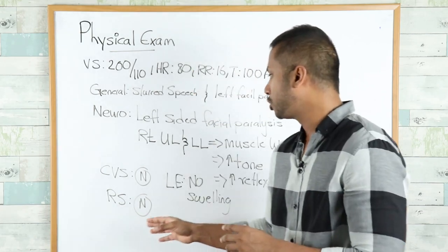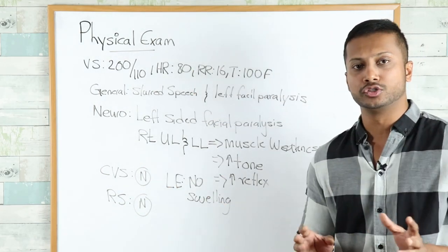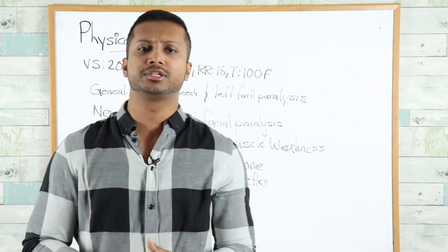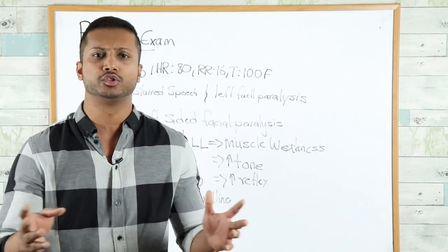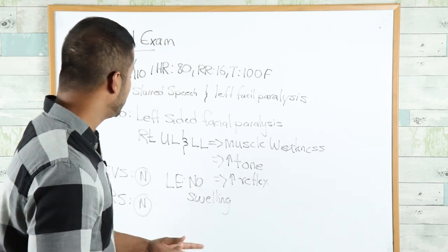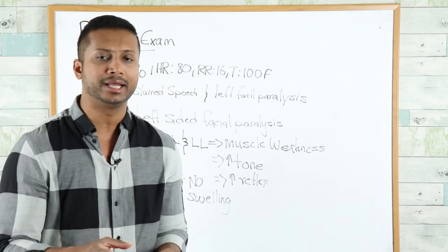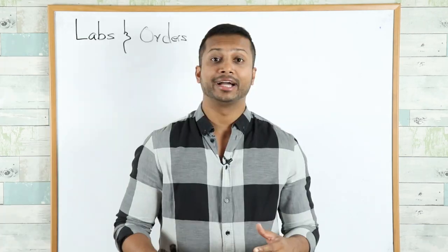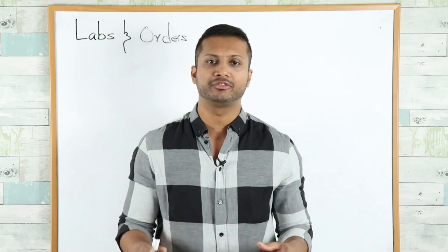Cardiovascular examination is normal - S1 S2 heard, no rubs, gallops or murmurs. Respiratory system shows normal vesicular breath sounds with no wheezes or crackles. Lower extremities show no swelling, no evidence of DVT or pitting pedal edema.